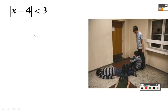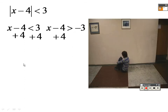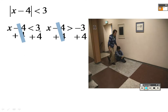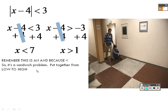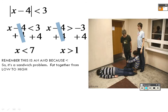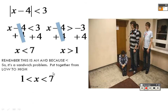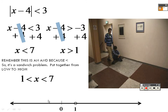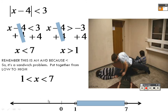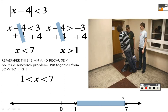So x minus 4 is less than 3. Write down what you got and write it again — flip the sign and make it negative. Adding 4 to both sides gives x is less than 7 and x is greater than 1. This is an AND (sandwich) problem, so the answer goes from low to high: x is between 1 and 7. You can graph it — there's 1, there's 7, and you shade everything in between.